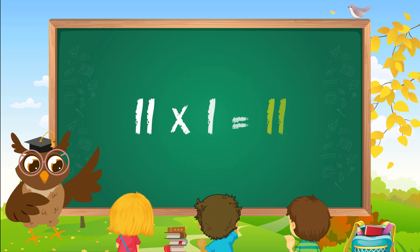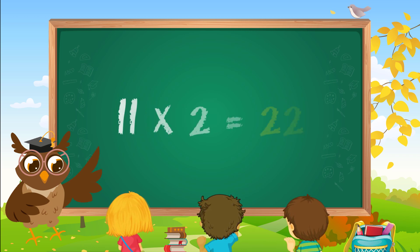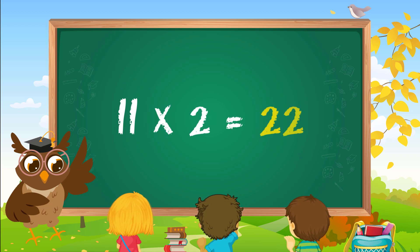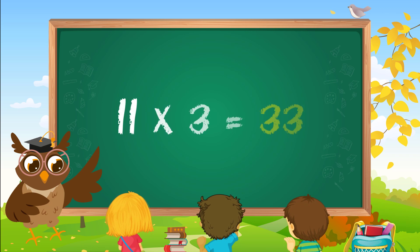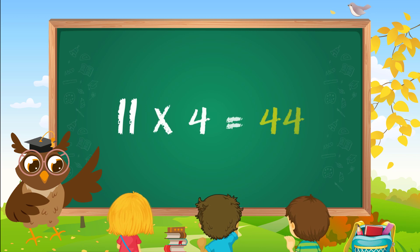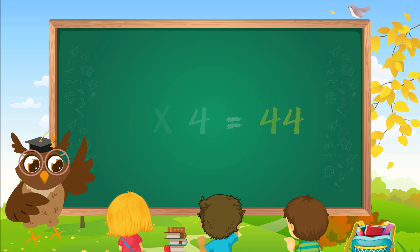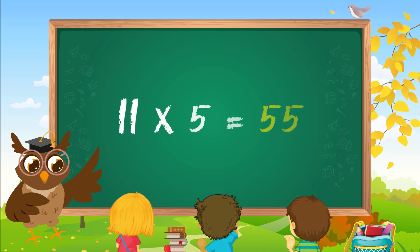11 ones are 11. 11 twos are 22. 11 threes are 33. 11 fours are 44. 11 fives are 55.